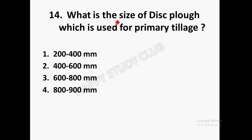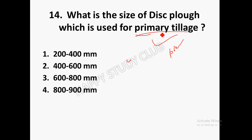Next: What is the size of disc plow used for primary tillage? Primary tillage is the first tillage after the last harvest, done when the soil is wet, to prepare soil for cultivation. The correct answer for disc plow size used in primary tillage is 600 to 800 mm.